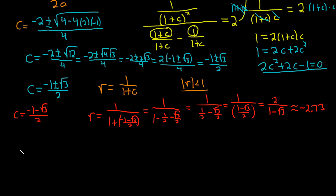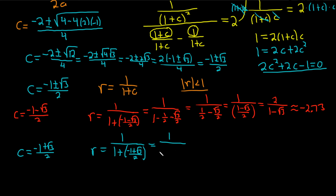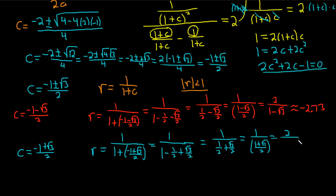Now let's check c = (−1 + √3)/2. So r = 1 over (1 + (−1 + √3)/2). This is 1 over (1 − 1/2 + √3/2) = 1 over (1/2 + √3/2) = 1 over ((1 + √3)/2) = 2 over (1 + √3). Putting this in the calculator: 2 divided by (1 + √3) gives approximately 0.732. That's less than 1 in absolute value, so all is good.